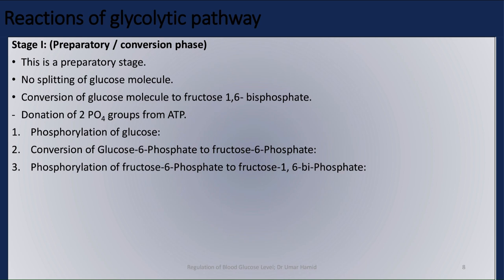The reactions of glycolytic pathways begin with Stage I, which is the preparatory or conversion phase. In this stage, there is no splitting of the glucose molecule. Instead, glucose is converted to fructose-1,6-bisphosphate. Two phosphate groups are donated from ATP in this phase.